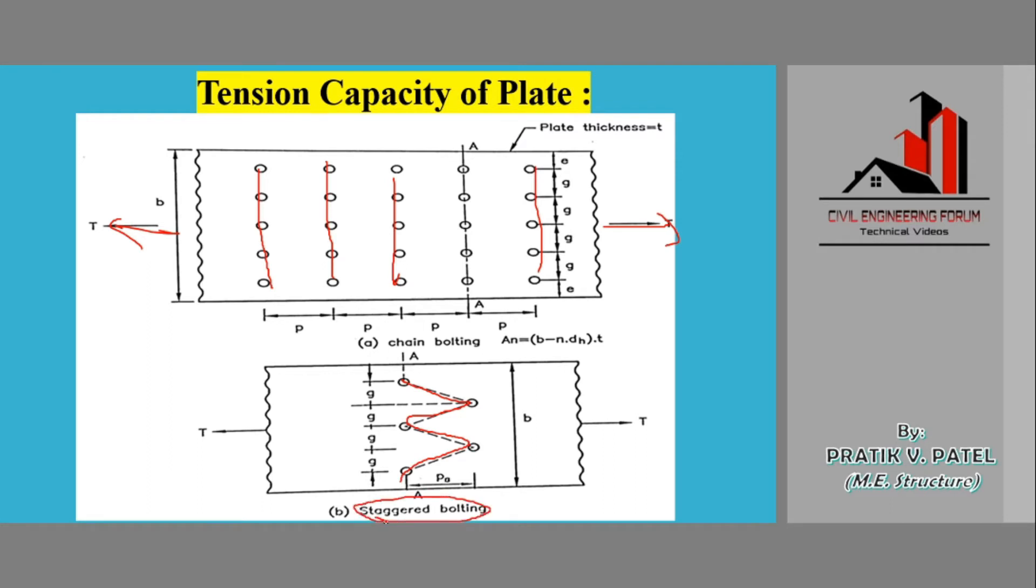This is known as staggered bolting while the other is known as chain bolting. It is obvious that when we apply force in this direction, this plate may have a failure plane maybe over here because it is having this as a weaker plane.